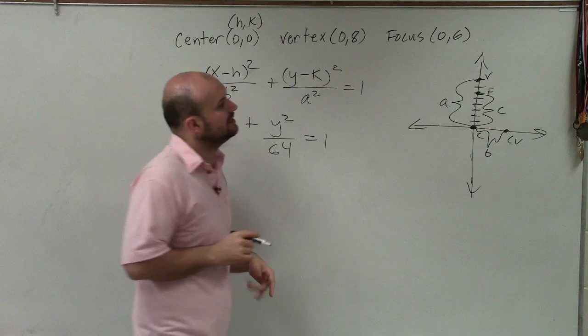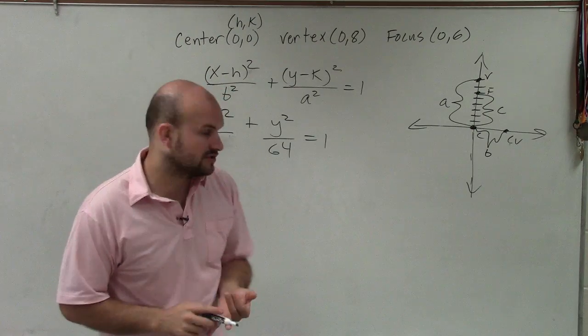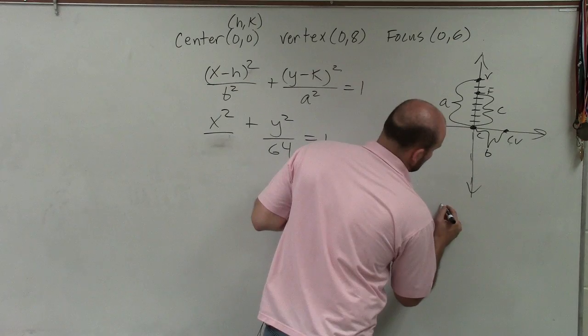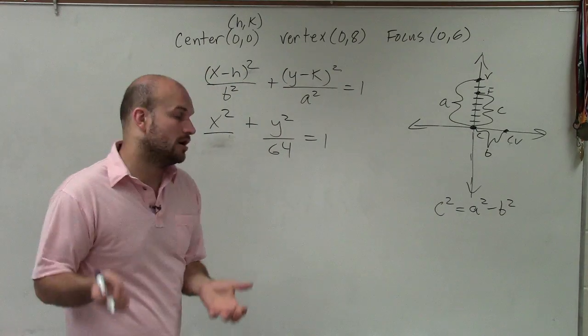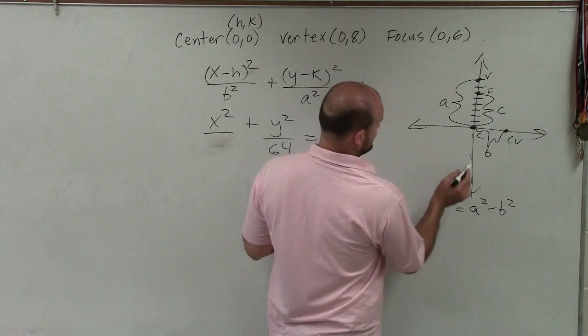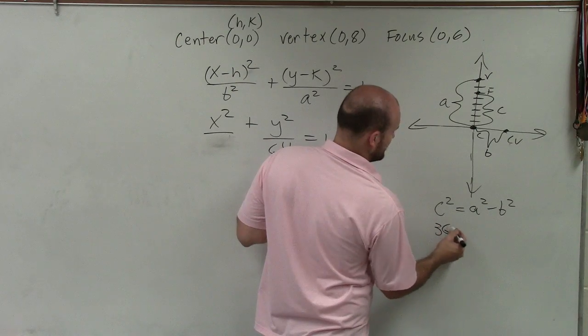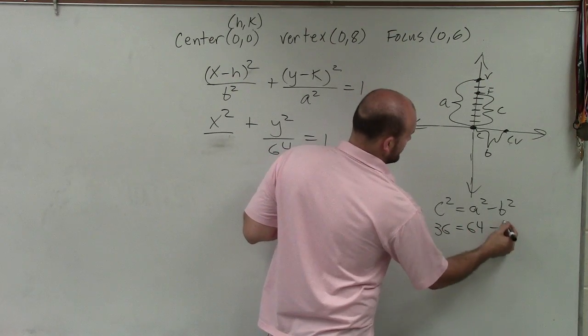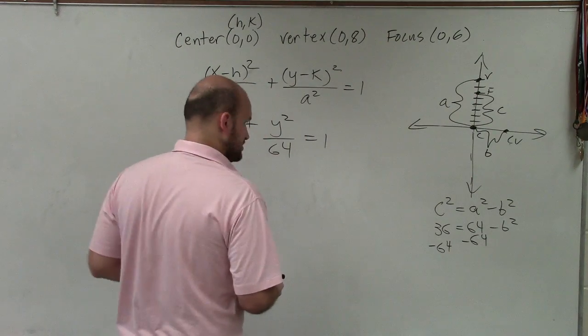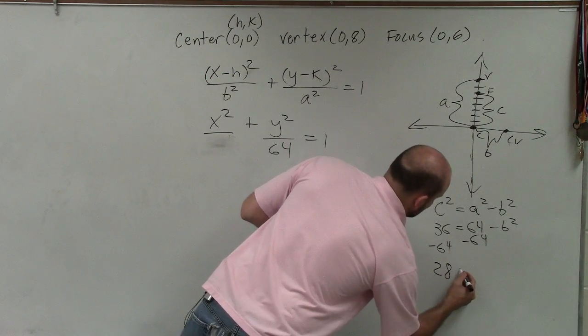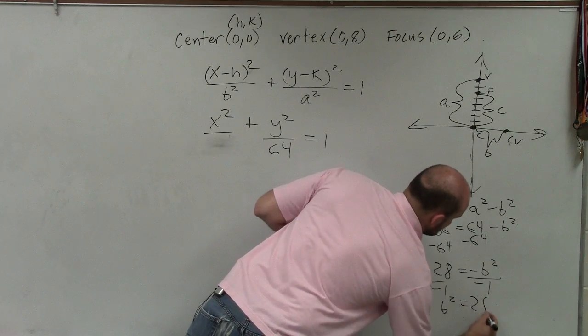So there is a relationship between the distances of your center to your focus, co-vertex, and vertex. And that relationship is c² = a² - b². And that relationship works for all ellipses. OK, so c² is the distance from your center to your foci, which in this case is 6. So square that, it would be 36. a² is going to be 64 minus b². So I subtract 64. I should have -28. Negative 28 equals negative b². Divide by negative 1. b² equals 28.